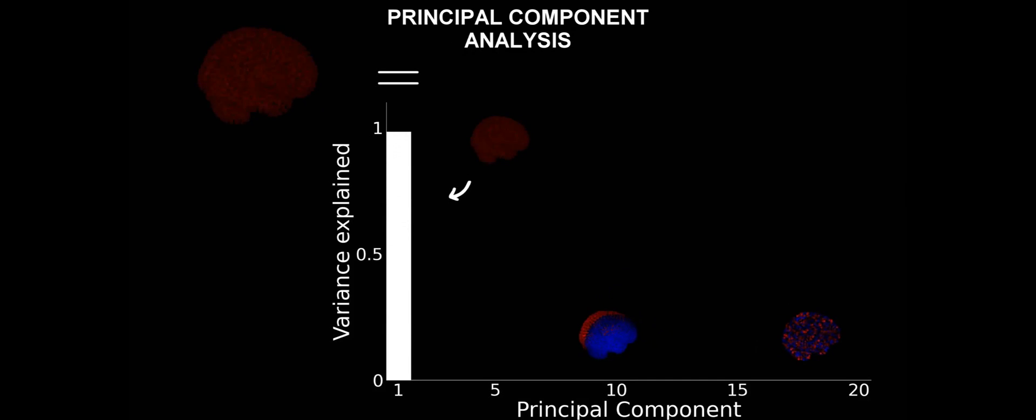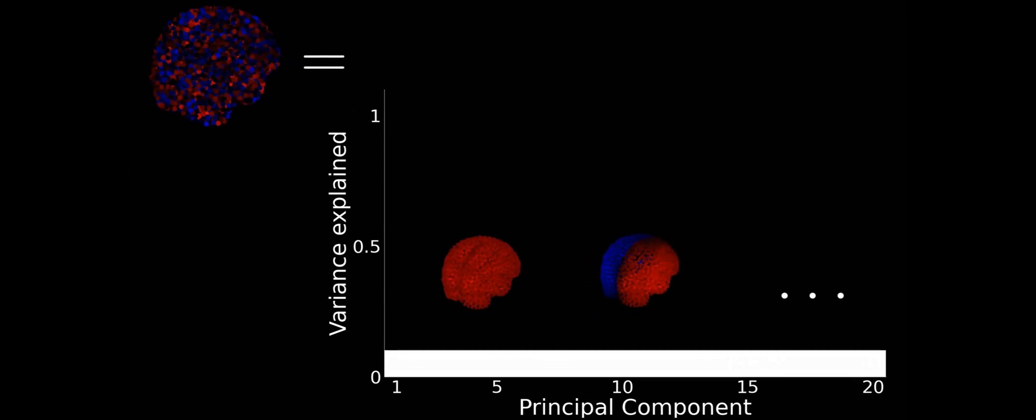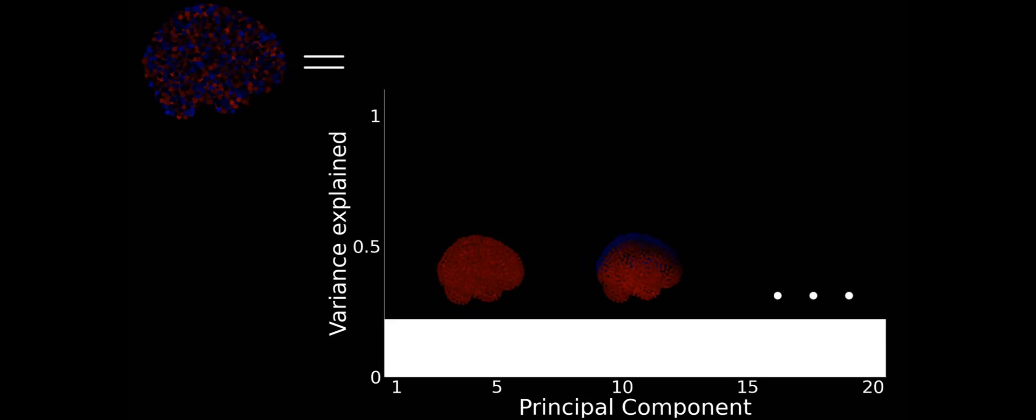If the system was to be completely ordered, then only one dynamical mode would be predominant, the homogeneous one, and the spectrum of principal components would look something like this. On the other hand, if the system was to be completely disordered, the spectrum of principal components would be completely flat, as all dynamical modes are somehow present.